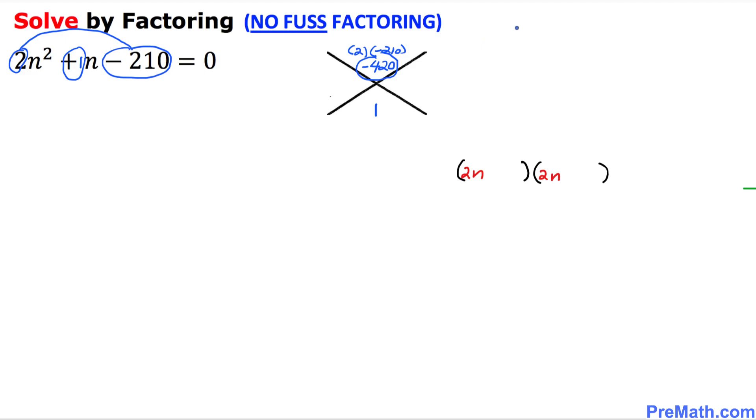So we simply got 2 times right up here. Don't worry about this negative sign. Just put down 210. And now I am going to put down 2 times, and 210 could be written as 10 times 21. Now just simply multiply this number. 2 times 10 turns out to be 20. 20 times 21. And we can see if we multiply them, we are going to get 420. And if we subtract them, we are going to get 1. So that means our number is going to be 20 and 21.